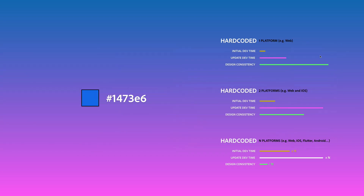If that color is hard-coded into one website, that's fine — you probably have to update that value in a couple of places and it's not a big deal. But then if you start adding more platforms — web, mobile, iOS, Android — you have to update your color in more places. Not only that, iOS and Android represent colors in a different way. So if you add more platforms, say Flutter and others, it's going to hurt your design consistency and become more expensive to make changes to your color.